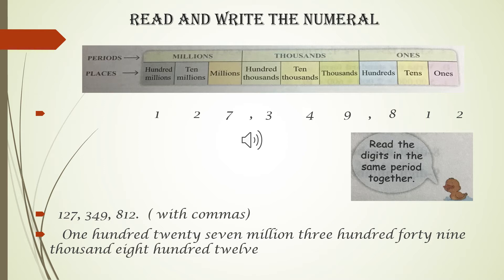Seven in the millions place, two is in the tens millions place, one in the hundreds millions place, comes under the millions period. Now, we read the number 127,349,812.